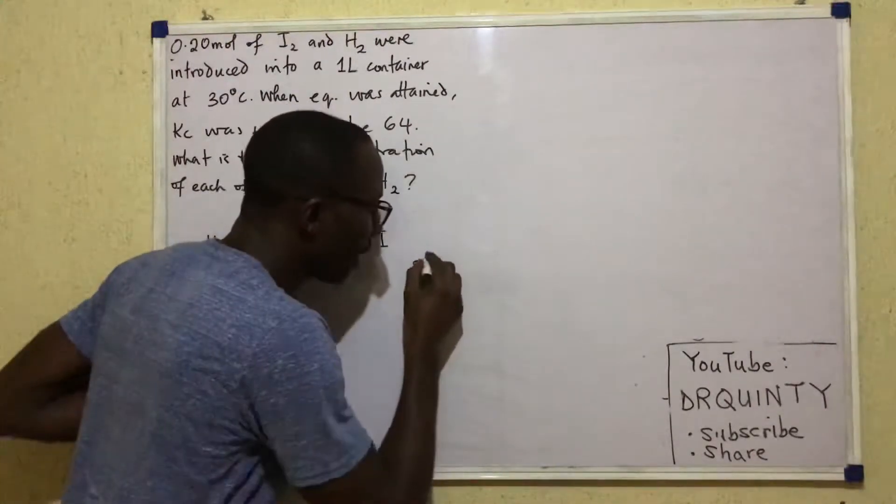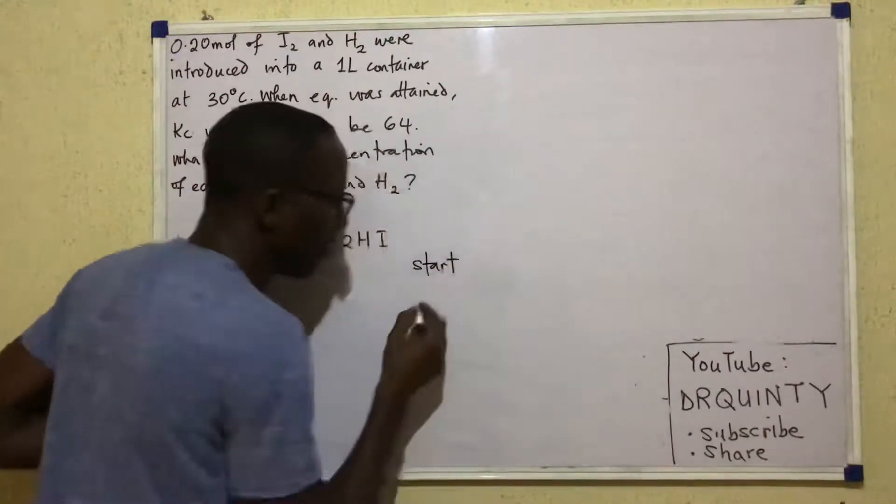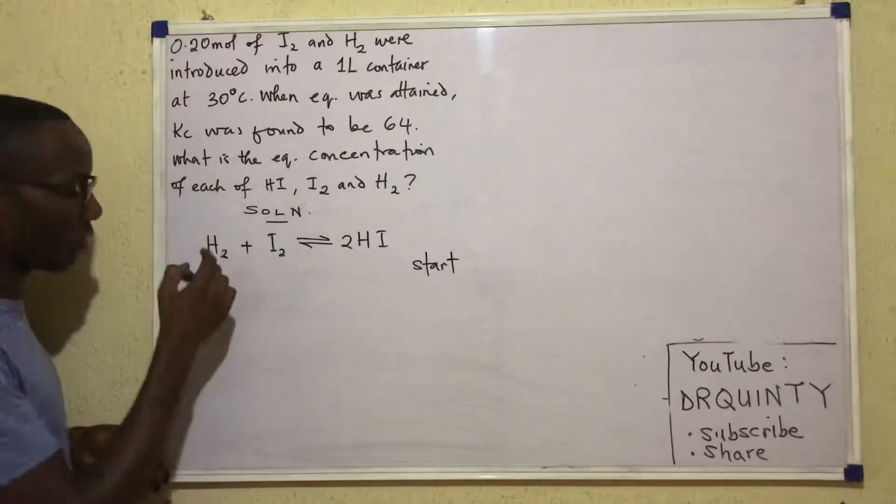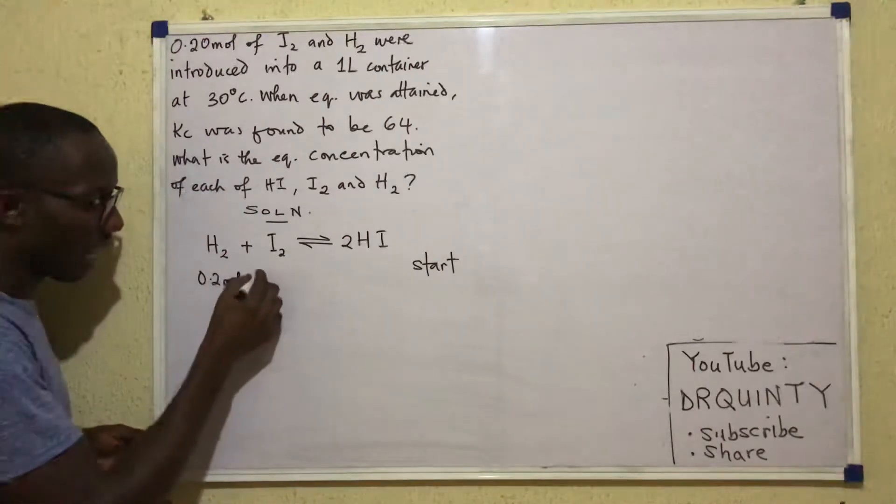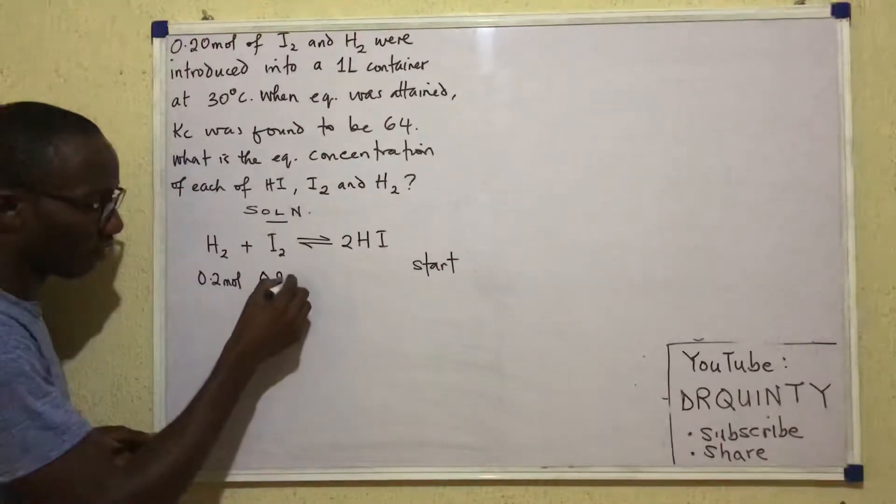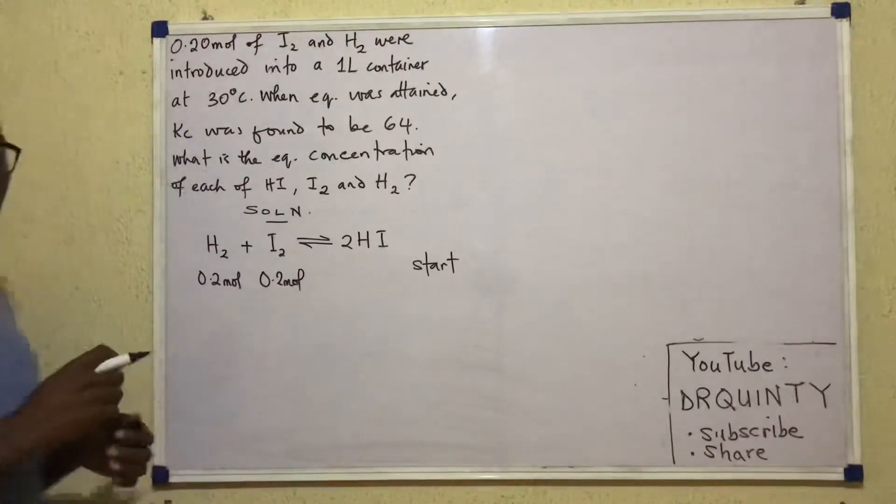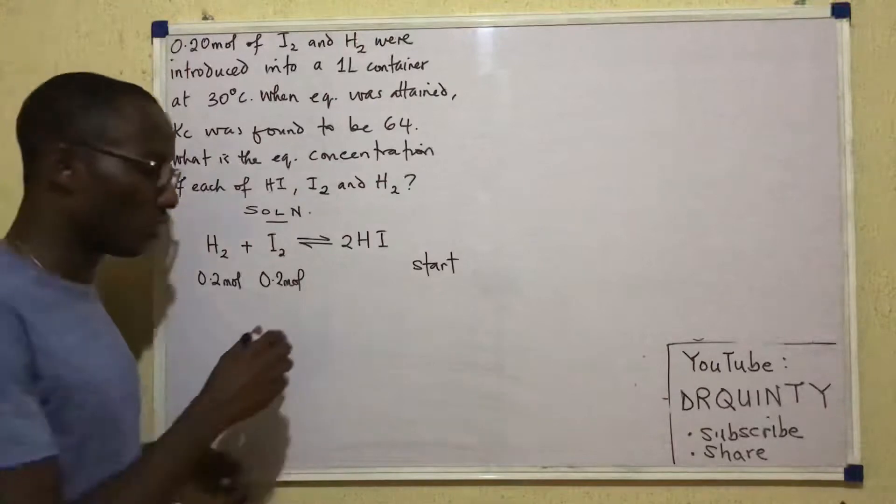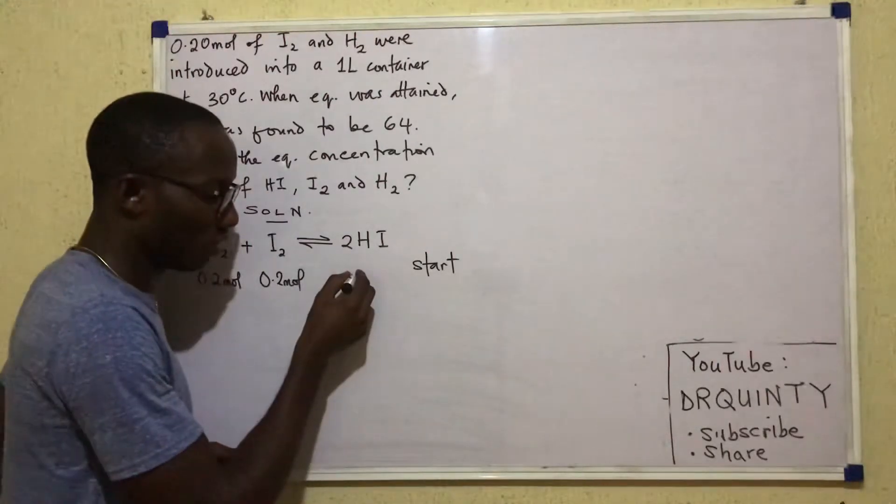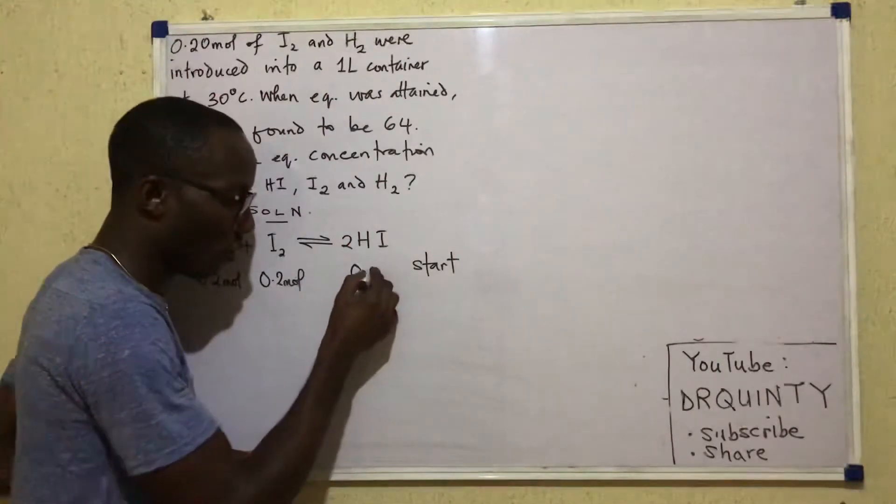Now, at the start of the reaction, according to this problem, 0.2 moles of this and 0.2 moles of that were added to the reaction vessel. So there was none of this, and I'm going to call the quantity of HI present 0 moles.